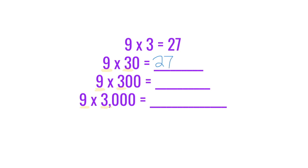And now we just have to look at the zeros. There is one zero in 30. So there will be one zero in our product. So 9 times 30 equals 270. We'll do the same for the next two. 9 times 3 is 27. But now there are two zeros in 300. So there will be two zeros in the product, 2,700.